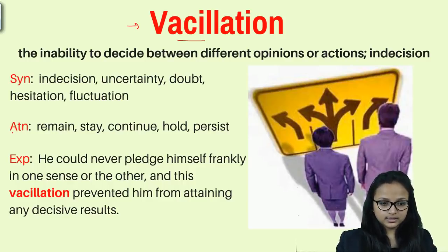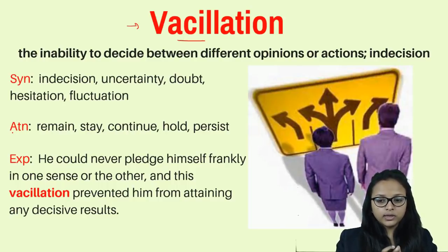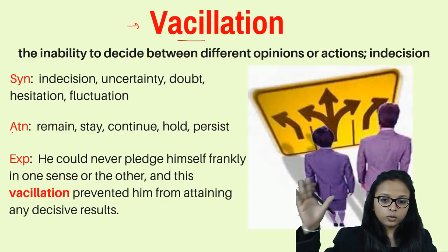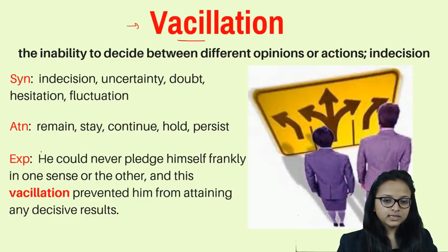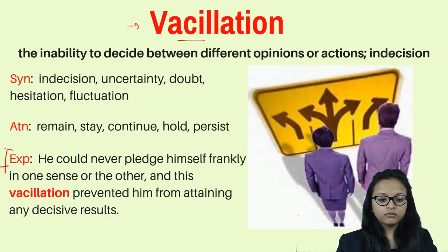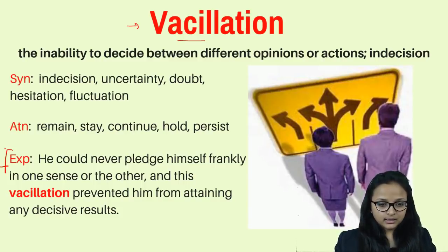Antonyms of vacillation are: remain, meaning you stay in place and have decided what to do; continue, meaning you are not going back and forth but staying on the same path; hold; and persist, meaning you stay moving in the same direction without distraction. Example: 'He could never pledge himself frankly in one sense or the other, and this vacillation prevented him from attaining any decisive result.'